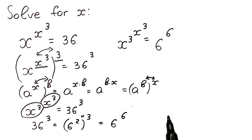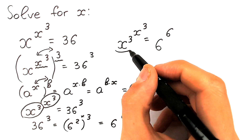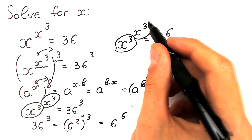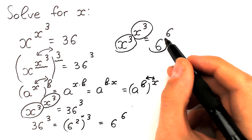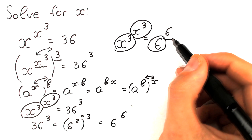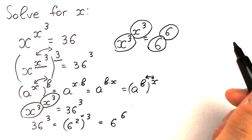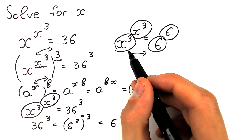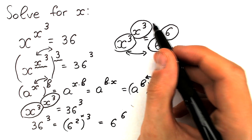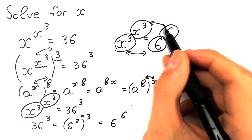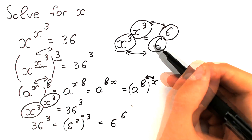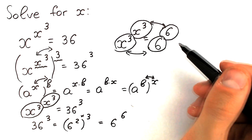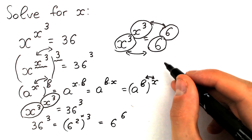Take a close look: on the left we have x cubed as the base and x cubed as the exponent. On the right we have 6 as the base and 6 as the exponent. The one and only case this equation holds is when base equals base or exponent equals exponent — both give the same condition here. So x cubed equals 6, and that is our main equation to solve.